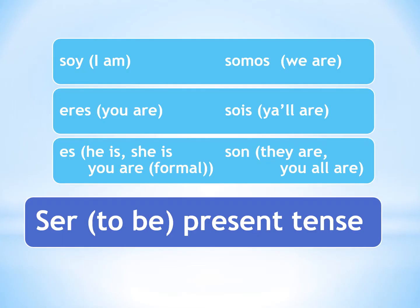Here are the conjugations of the verb ser, which means 'to be' in the present tense. Ser is the infinitive form, but just like in English I can't say 'I to be the teacher' — I have to change it. So: soy means 'I am,' eres is 'you are,' and es can mean 'he is,' 'she is,' or 'you are' with the formal usted version.